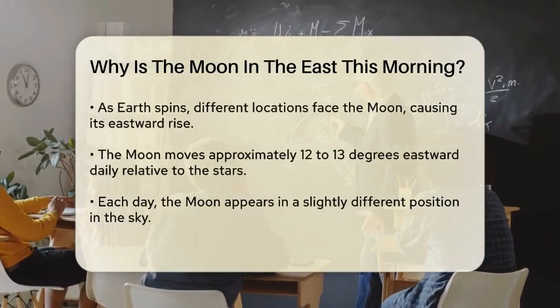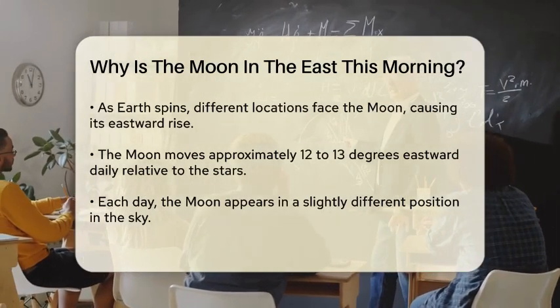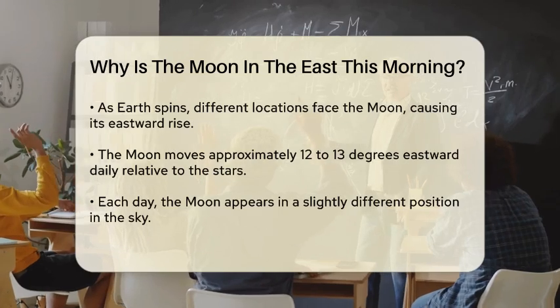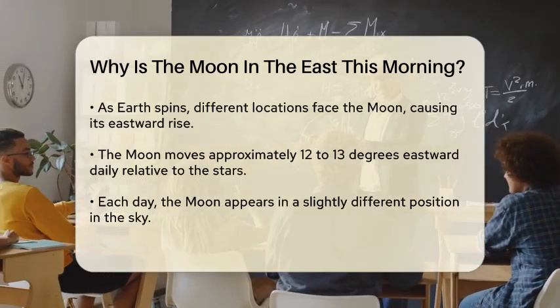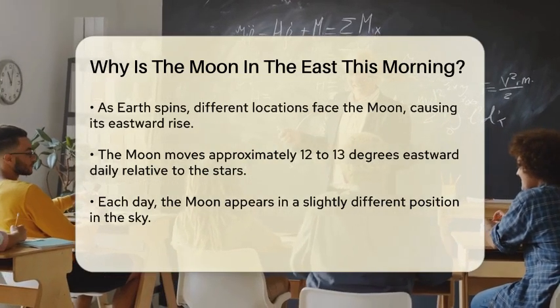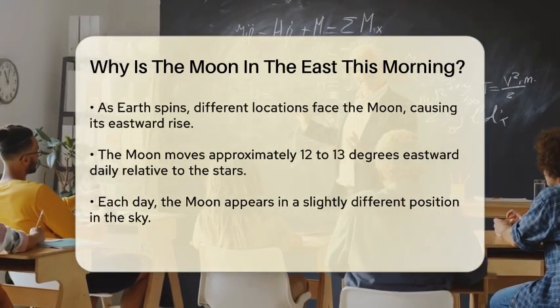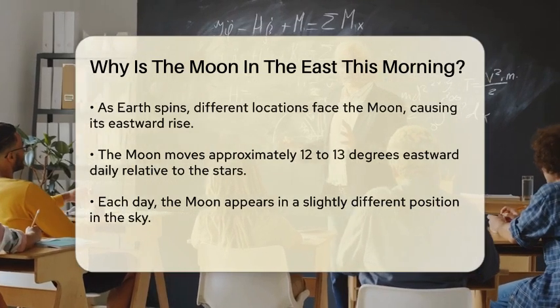Now let's talk about the moon's orbital motion. The moon moves about 12 to 13 degrees eastward each day relative to the stars. This means that every day, the moon appears in a slightly different position in the sky compared to the previous day.